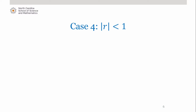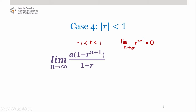Now suppose that the absolute value of r is less than 1 — in other words, our common ratio is between 1 and negative 1. In this case, we find that the limit as n approaches infinity of r to the n plus 1 equals 0. So our limit as n approaches infinity of the expression we've seen before is equal to a divided by 1 minus r, which is a finite value. So if the common ratio is between negative 1 and 1, we find that the series converges.